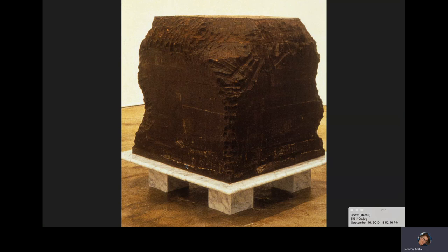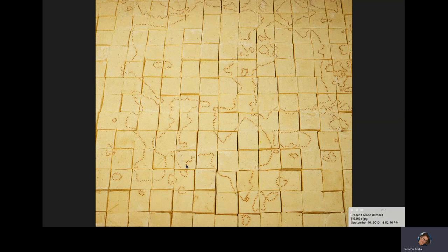Here's another piece also by Janine Antoni — it's a massive cube of chocolate called Gnaw. It was a perfect cube of chocolate, but after she cast it, she gnawed away at it until it became the shape you see now.